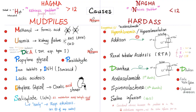The causes of HAGMA and the mnemonic is MUDPILES: M is methanol, U is uremia, D is diabetic ketoacidosis, P is propylene glycol, I is iron tablets, L is lactic acidosis, E is ethylene glycol, and S is salicylate. In all of these, you have added an unmeasured anion and an acid to your body. In methanol, you've added formic acid or formate. In uremia, you've added nitrogenous waste products — azotemic materials — unmeasured organic acid anions. In diabetic ketoacidosis, you've added ketones such as acetone, acetoacetic acid, and beta-hydroxybutyric acid — acids and unmeasured anions. In lactic acidosis, you've added lactate. In ethylene glycol, you've added oxalic acid. In salicylate poisoning, salicylate itself is an unmeasured anion and an acid.